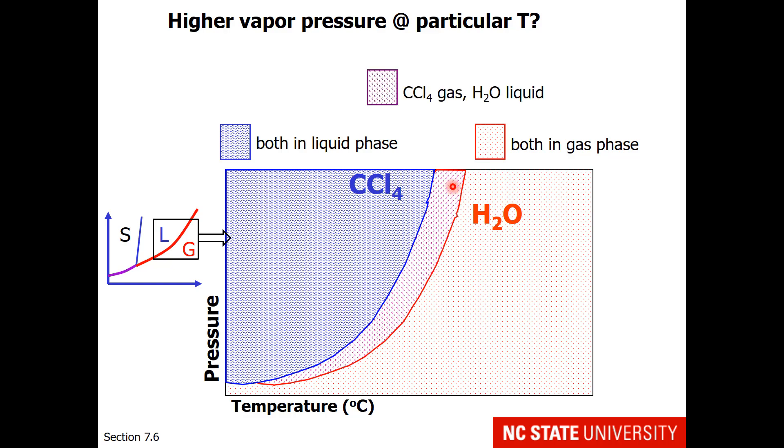This region with the V-shaped polka dots is where carbon tetrachloride is a gas because we are to the right of the vapor-liquid equilibrium line. However, water in this region would be a liquid because we are to the left of the liquid-vapor equilibrium line.